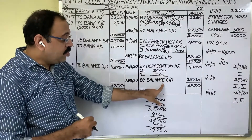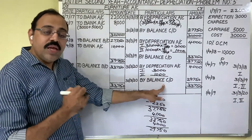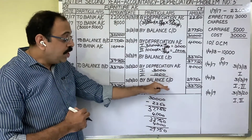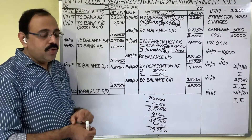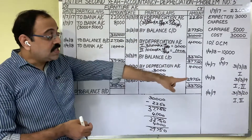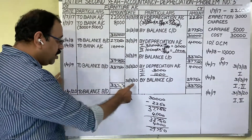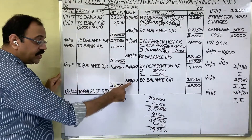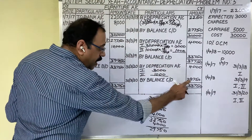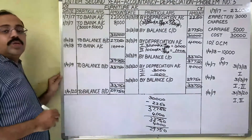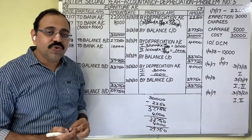In the third year, the asset account is showing some balance, meaning the asset account is not closed. When working in any organization, you would continue this account for the next year. But as a student, you have to stop here because he is asking to prepare the asset account only for three years. So for the fourth year, just bring the balance: date 1st April 2020, 'To Balance Brought Down' — write that amount. This is all about the fifth problem in the depreciation lesson. Hope this video is useful to you. Thank you.